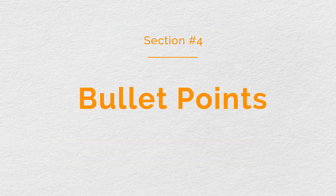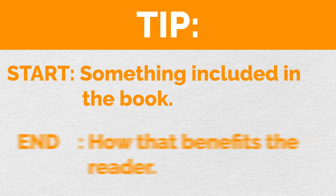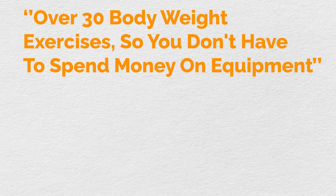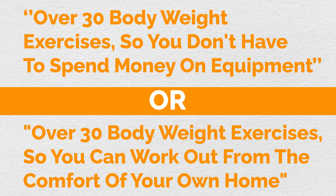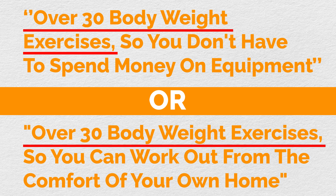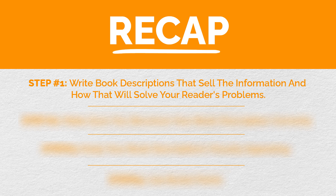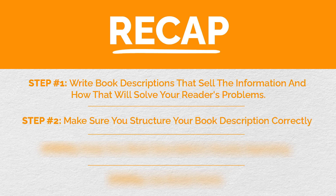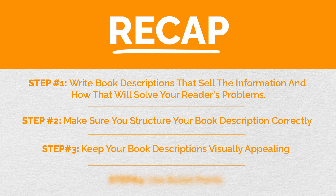One last thing I like to add to my descriptions is bullet points. Most people are not going to read your description, but they are going to read your bullet points. I always include at least three bullet points, and here's the trick: start the sentence with something included in your book and end it with how that benefits the reader. For the women's weight loss book, I'd write something like 'Over 30 body weight exercises so you don't have to spend money on equipment' or 'Over 30 body weight exercises so you can work out from the comfort of your own home.' The first part tells the reader what your book offers; the second part tells them why they should care. To quickly recap: write descriptions that sell the information inside your book and how it solves your reader's problems. Structure it with a hook, then build rapport by specifying their problem and selling your book as a solution, then add a call to action. Make sure your description is visually appealing with correct formatting, and use bullet points to show off features and benefits.